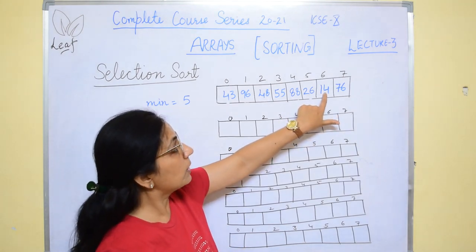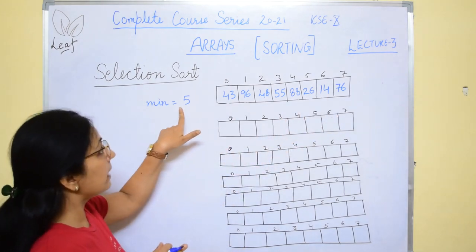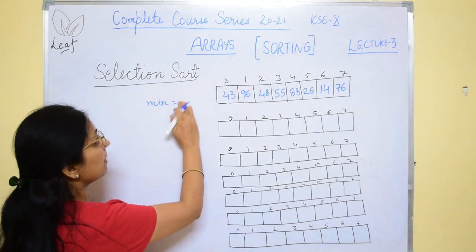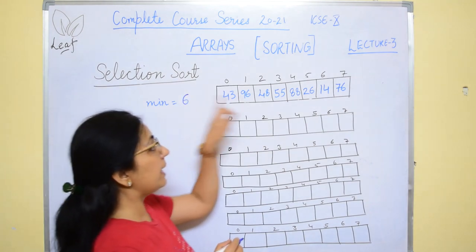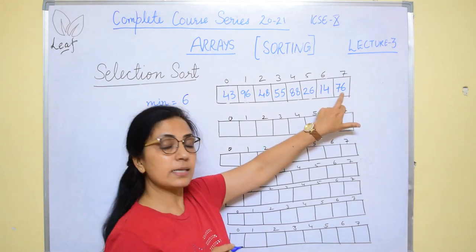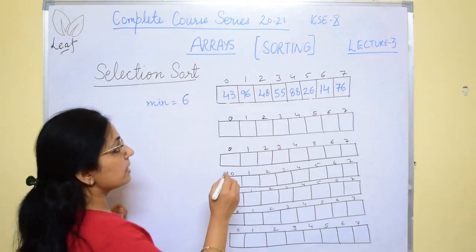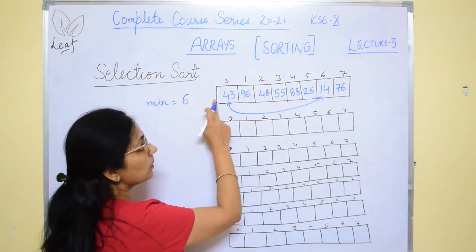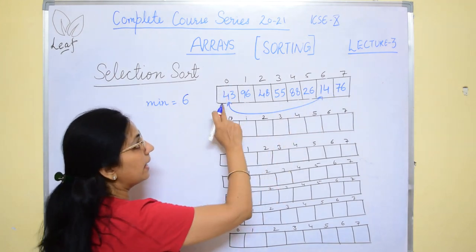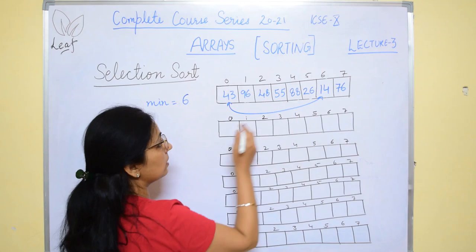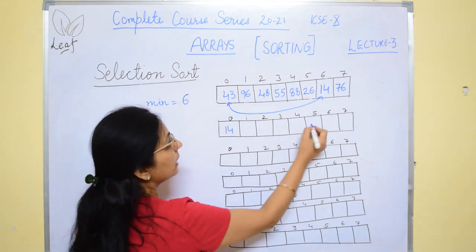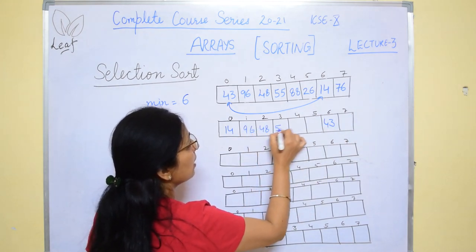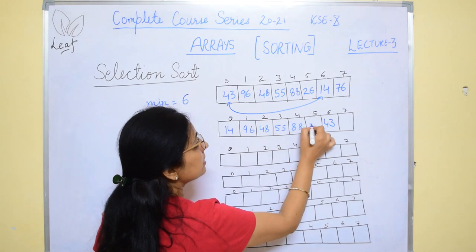Next we come to 14 — 14 is again smaller than the current minimum, so the minimum variable will have the index number of 14. Then 76 is bigger, no change. Now after this, we will interchange these values: the 0th position will get this value, and the 6th subscript will get 43. So it will be 14 at position 0, and 43 at the 6th subscript. The rest remain unchanged.